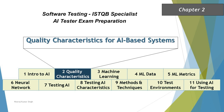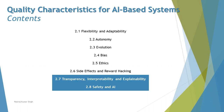Hello friends and greetings for the day. Welcome back to another tutorial on our ISTQB AI Tester certification. We are in Chapter 2, talking about quality characteristics for AI-based systems, and we are looking at the next segment: 2.7 Transparency, Interpretability, and Explainability, along with the last topic 2.8 Safety and AI.